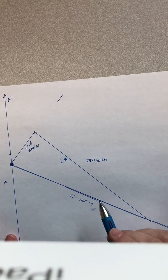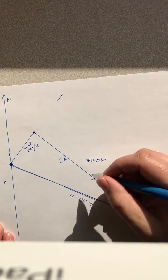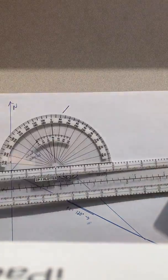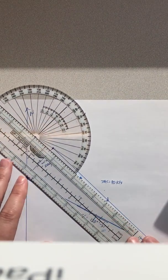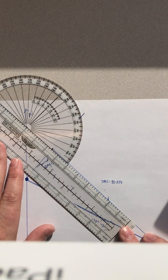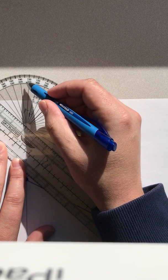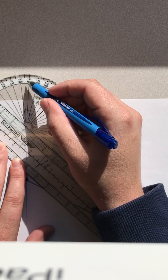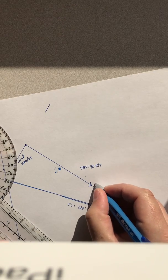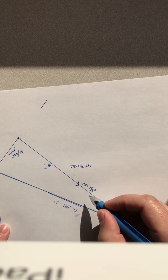Our triangle is now complete and we need to interpret the data. We need to figure out our heading now that the winds are factored in. We take our north reference line, line up our newest triangle line — just like we would determine a true course on a sectional chart — and read off our true heading, which comes out to about 135°.